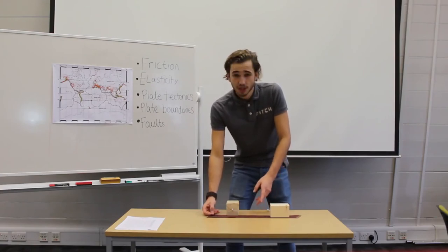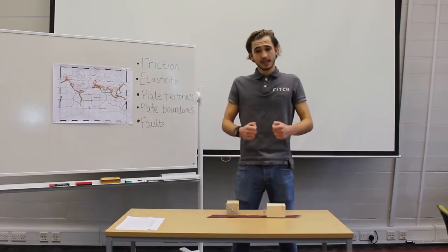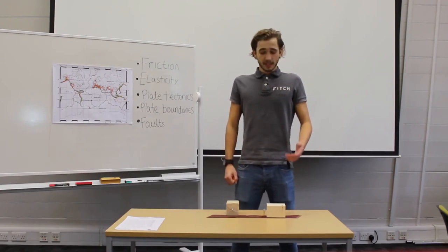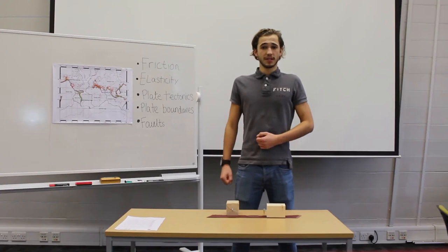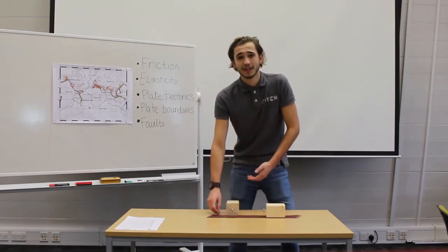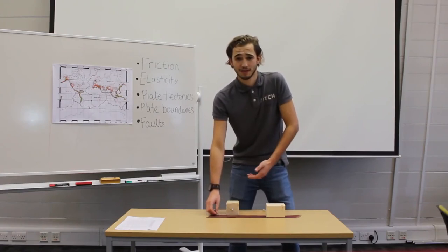Eventually, enough elastic energy is stored, is accumulated, to cause the block to move. At this point, the pulling force is greater than the frictional force holding it in place. Similarly, in a fault system, enough elastic energy is eventually stored to overcome the frictional force. And then we have an earthquake, where energy is released in the form of the crushing of rocks, heat and seismic waves, and the propagation of seismic waves.